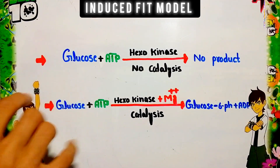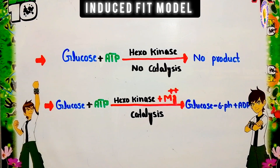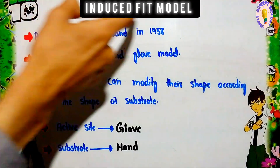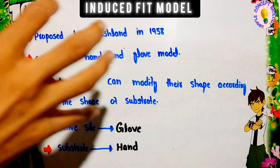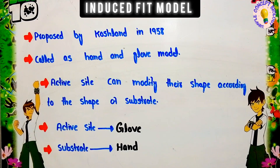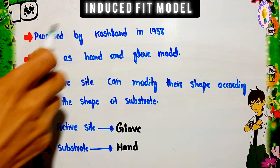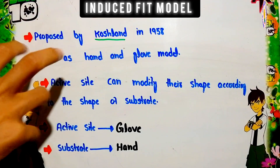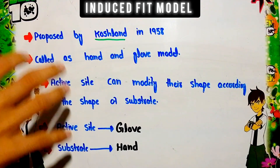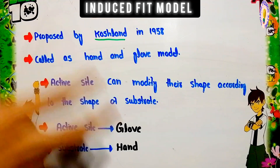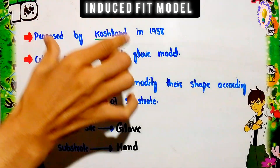This is the overall concept of the induced fit model. The term 'induced' indicates that the substrate or the inducer substance is able to change the shape of the active site of the enzyme, which is why it is called the induced fit model. This model was proposed by Koshland in 1958. It is also called the hand and glove model, because just as a hand is able to change the shape of a glove when put on, the substrate changes the shape of the active site.